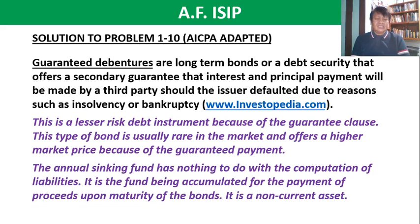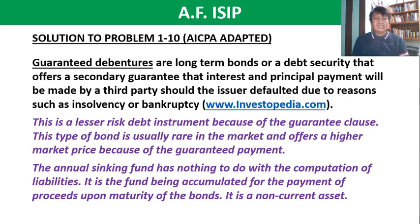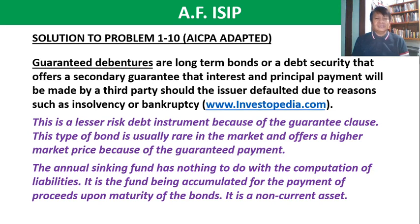The annual sinking fund is the fund accumulated for the payment of proceeds upon maturity of the bonds — it is a non-current asset. Whenever you issue a bond, there should be a bond sinking fund. Starting from year one, you accumulate funds in this account until the bond reaches its maturity. The bond sinking fund provides peace of mind to both the issuer and investors that payment of principal will be assured upon maturity.